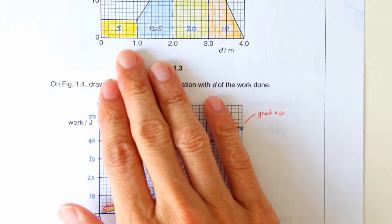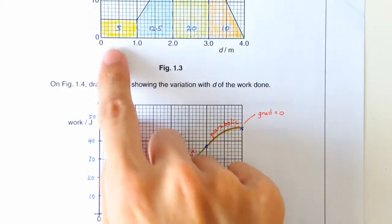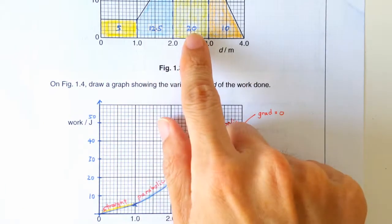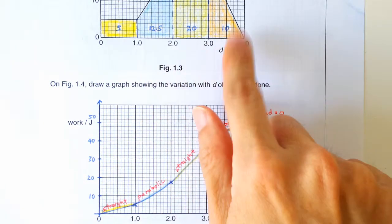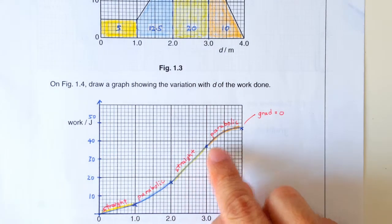So it's cumulative because the work done by the force just keeps increasing from 5 to 17.5 to 37.5, 47.5. So now you have these four data points, right?